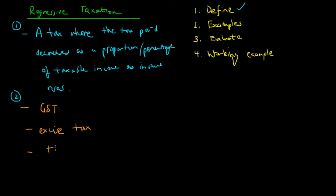Thirdly, we have tariffs, which are aimed to protect local businesses. So there are three types or examples of major regressive taxation in the economy at the moment. We've done examples.